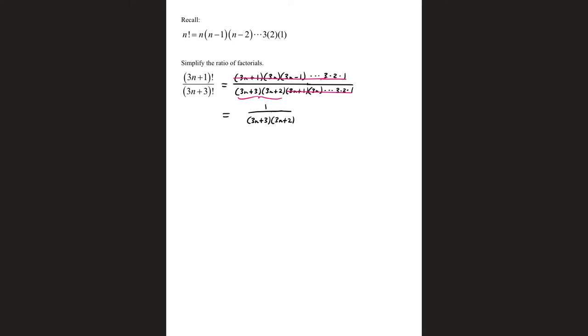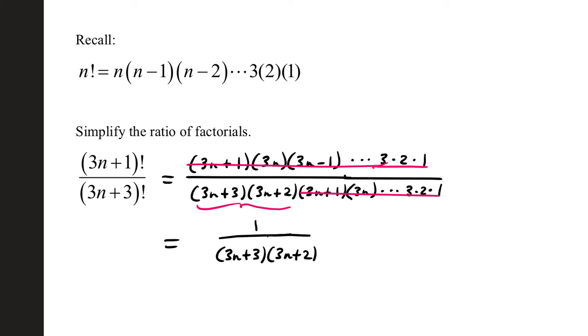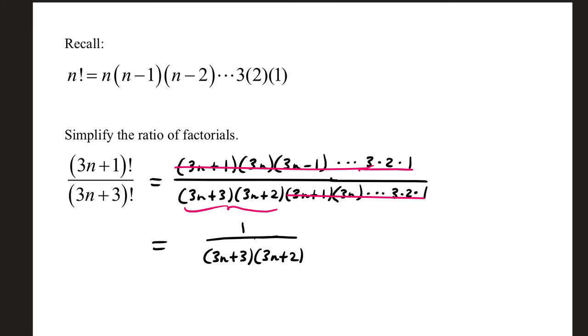And then we threw in a wild card. We're actually going to use factorials quite a bit later when we do a ratio test for series, convergence or divergence. Remember that n factorial is defined as n times n minus 1 times n minus 2. And you keep counting down until you reach 1. You're multiplying all the way through. So for a quick example, suppose I had 5 factorial.